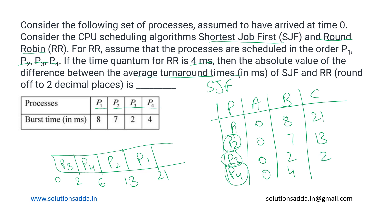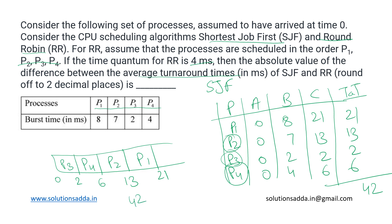The completion times are: P1 = 21, P2 = 13, P3 = 2, and P4 = 6. Since turnaround time is the difference between completion time and arrival time, and all arrival times are zero, the turnaround time equals the completion time for each process. The average turnaround time is (21 + 13 + 2 + 6) / 4 = 42 / 4 = 10.5 milliseconds for the Shortest Job First algorithm.